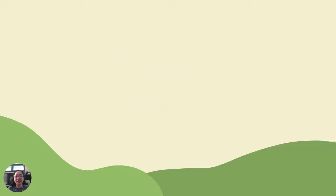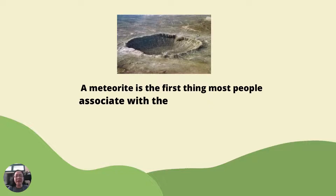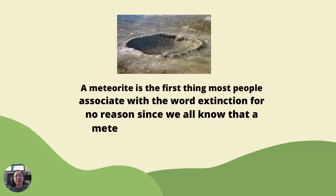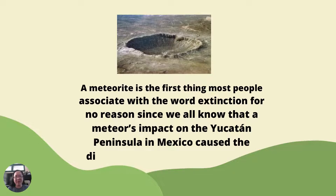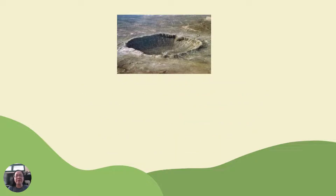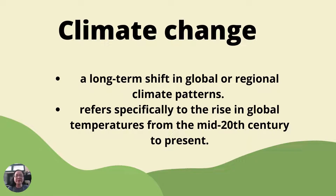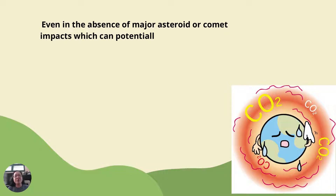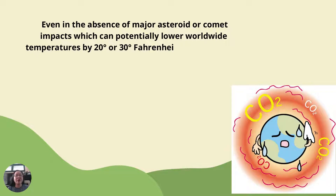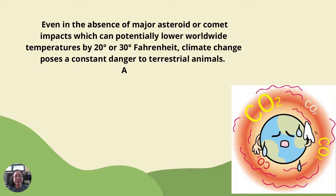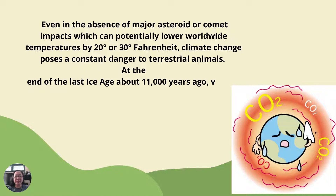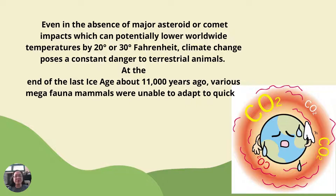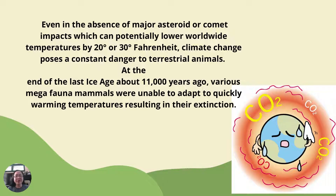Other factors include meteorite impacts and climate change. A meteorite is the first thing most people associate with extinction, since a meteor impact on the Yucatan Peninsula in Mexico caused the disappearance of the dinosaurs 65 million years ago. Climate change refers to a long-term shift in global or regional climate patterns, specifically the rise in global temperatures from the mid-20th century to the present. Even without major asteroid or comet impacts, climate change poses a constant danger to terrestrial animals. At the end of the last ice age, about 11,000 years ago, various large mammals were unable to adapt to quickly warming temperatures, resulting in their extinction.